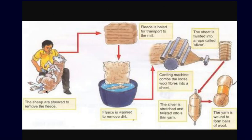This is the diagram in which you can see how the wool is prepared from the fiber. The first step is rearing. In rearing, these sheep are reared mainly for their wool. You keep these sheep as your pet just because you want their wool.